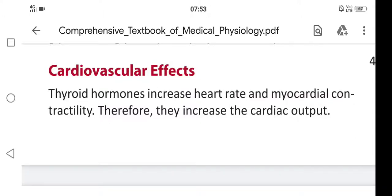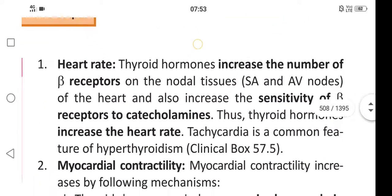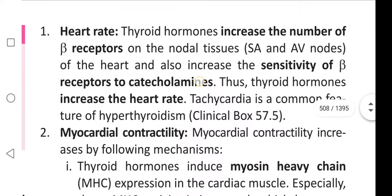In this video we are going to learn about the cardiovascular effects of thyroid hormones. Thyroid hormones increase heart rate and myocardial contractility, therefore they increase cardiac output. Thyroid hormones increase the number of beta receptors on nodal tissues — the sinoatrial and atrioventricular nodes of the heart — and also increase the sensitivity of beta receptors to catecholamines, thus increasing heart rate. Tachycardia is a common feature of hyperthyroidism.